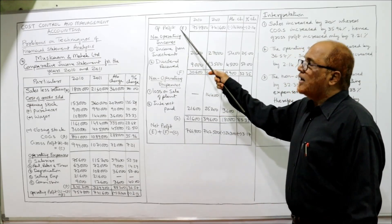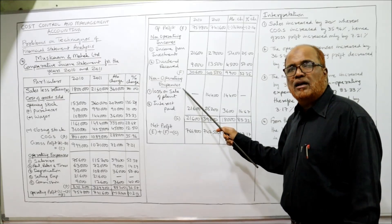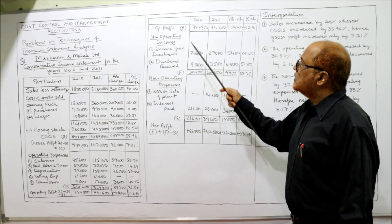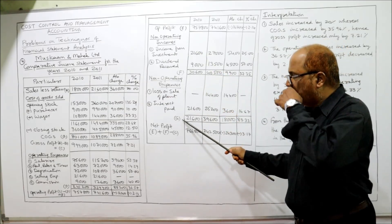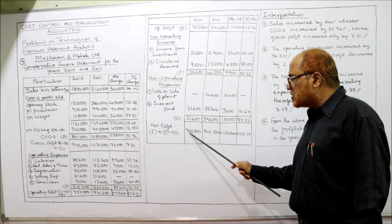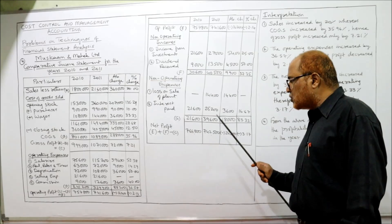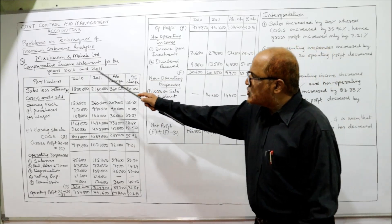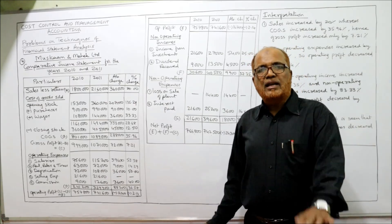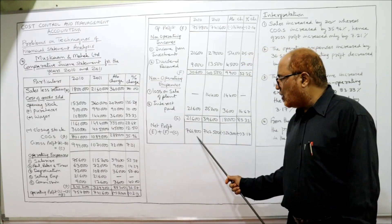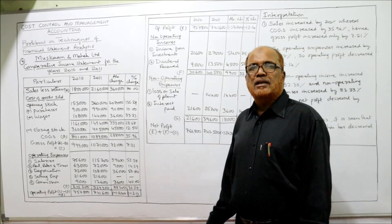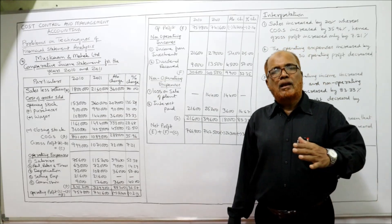So E plus F minus G gives us net profit: 7,66,800 for last year and 7,42,500 for the current year. The first two columns for 2010 and 2011 are now complete, giving us net profit for both years. We now begin calculating the absolute change.